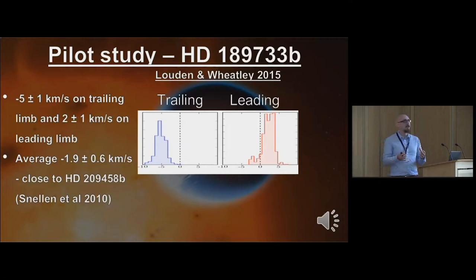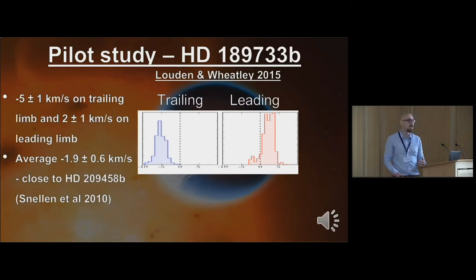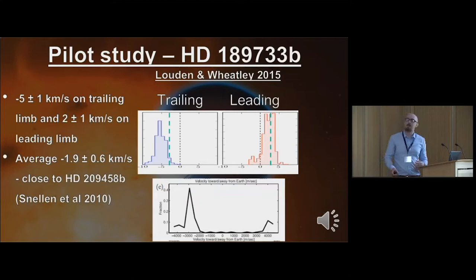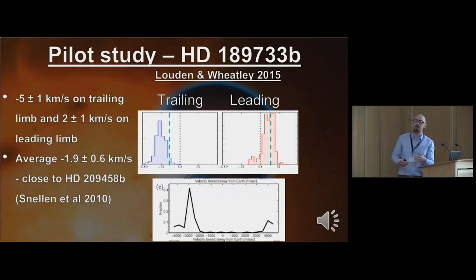If you average that out to a one-dimensional point, you get an average two kilometer per second blueshift. This is very similar to what Snell-Natal found in 2010 when they looked at HD209458b - they looked at a singular one-dimensional point and got minus two kilometers per second. So if you break it out, you start seeing the equatorial jet and extra rotation. This is a very close match to the velocities and asymmetry expected from theory. The velocity signal is higher in the blueshift because you also have the polar region coming towards you as well.